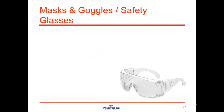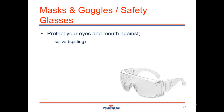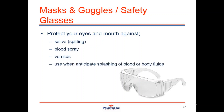Masks and goggles or safety glasses are very important for providing protection to your eyes and mouth against saliva, blood spray, vomitus or any other type of body fluids. The eyes and mouth are easy portals of entry for infection into the body, so these provide a barrier to stop that from occurring. Keep your safety goggles on you at all times, particularly when anticipating any splashes of body fluids or blood.